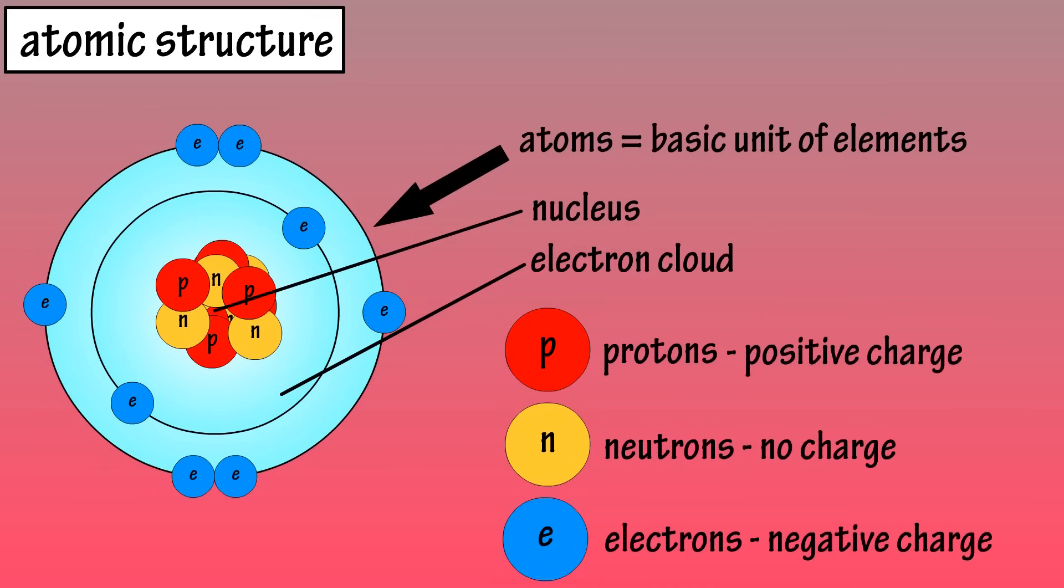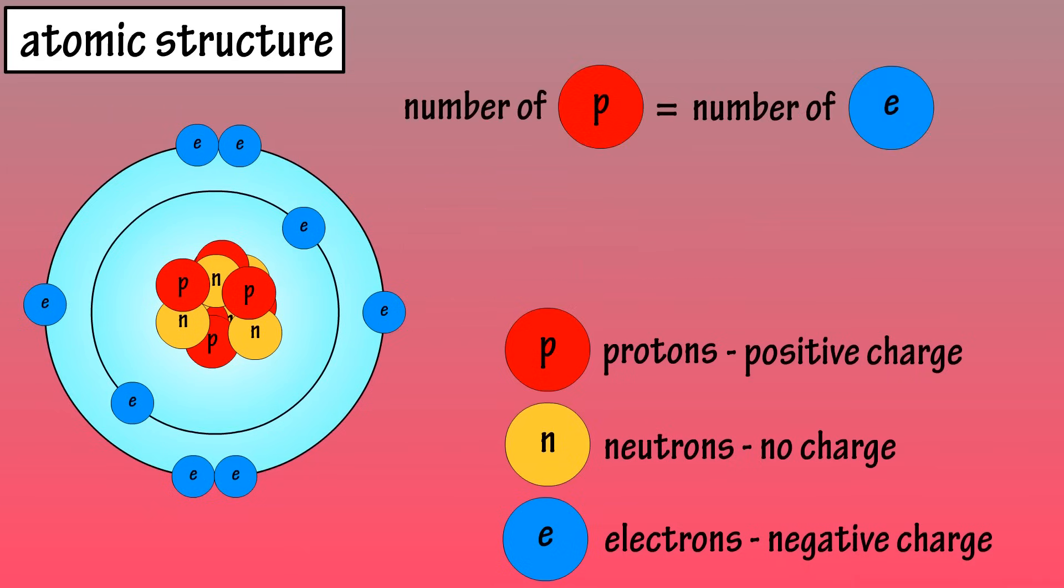Protons have a positive electrical charge, neutrons are uncharged, and electrons have a negative charge. The number of protons and electrons are equal, so atoms are electrically neutral particles.